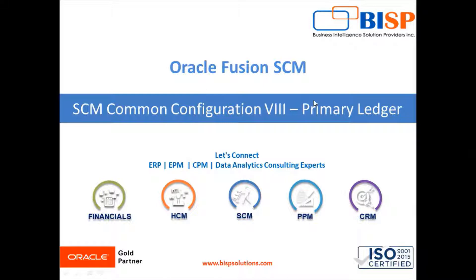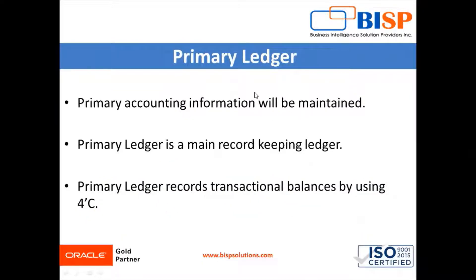First of all, what is a ledger? A ledger is a record of all the accounts that a company uses. The primary ledger in Oracle Fusion Cloud is where all the primary accounting information will be maintained. It is the main record-keeping ledger and a required component in our configuration. Every accounting configuration is uniquely identified by its primary ledger, which is closely associated with sub-ledger transactions and provides context accounting for them.